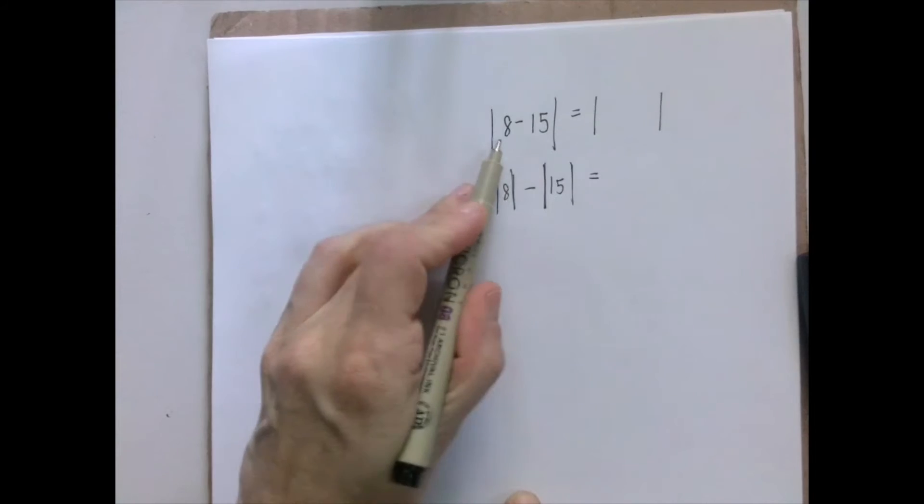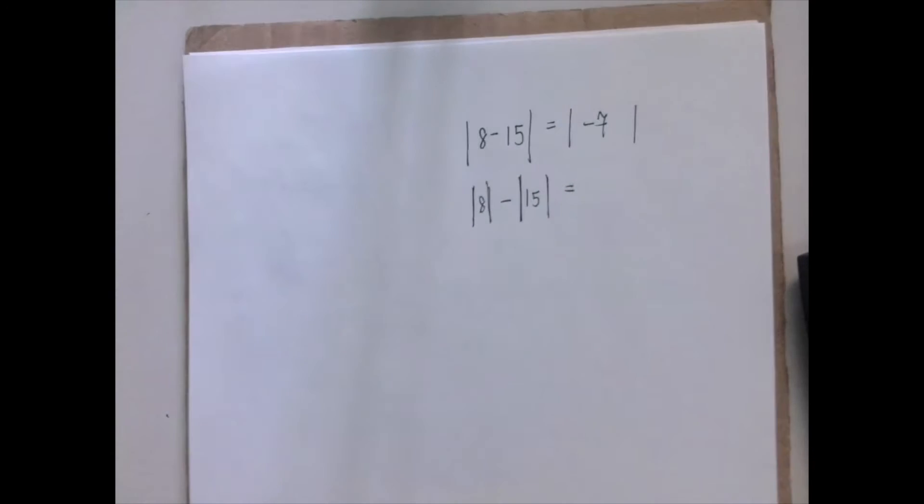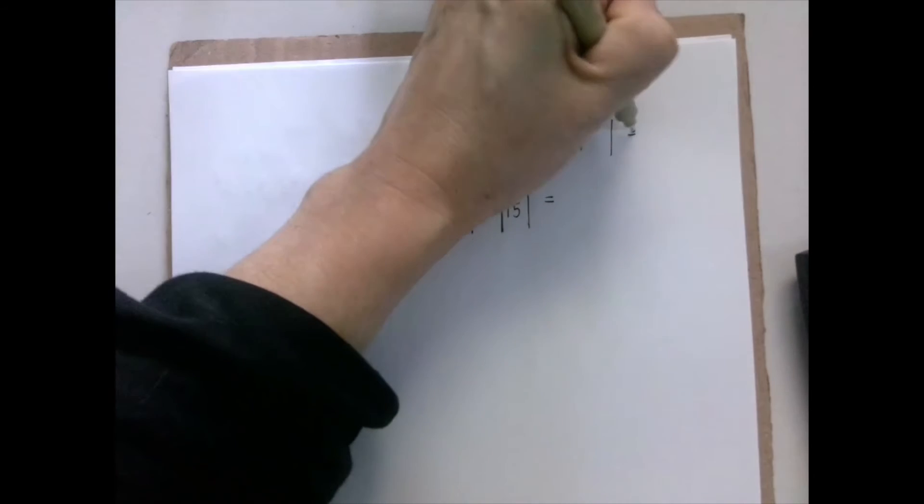So in the first case, 8 minus 15 is negative 7. And then the absolute value of negative 7 is plus 7.